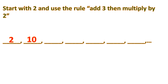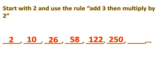Then we add 3 to get 13, times 2 is 26. Then add 3 again: 29, times 2 is 58. Add 3 again: 61, times 2 is 122. Then 122 plus 3 is 125, times 2 is 250. Then 250 plus 3 is 253, times 2 is 506. That is the pattern generated from the rule add 3, multiply by 2.